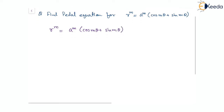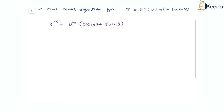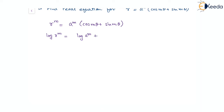Now if we take log on both sides, we will have log of r to the power of m equal to log of a to the power of m plus log of cos(mθ) plus sin(mθ).